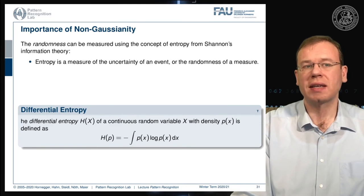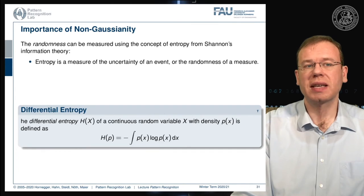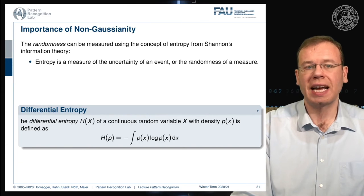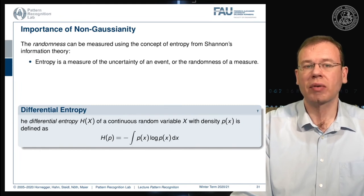Randomness can be measured using Shannon's information theory by computing entropy. The differential entropy of a continuous random variable x with density p(x) is defined as H(p) = −∫ p(x) log p(x) dx, and serves as a measure of the uncertainty or randomness of the distribution.